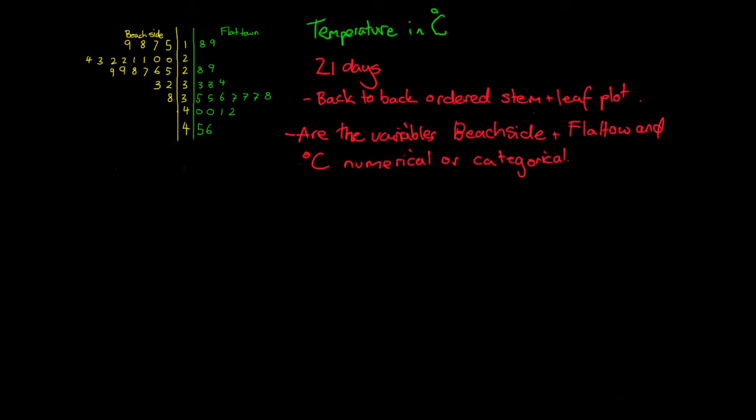So if we remember, we had two ways of remembering this. Categorical, this was categories. So data which was categories was categorical data. And then the easy way to remember numerical data was that it was just numbers.